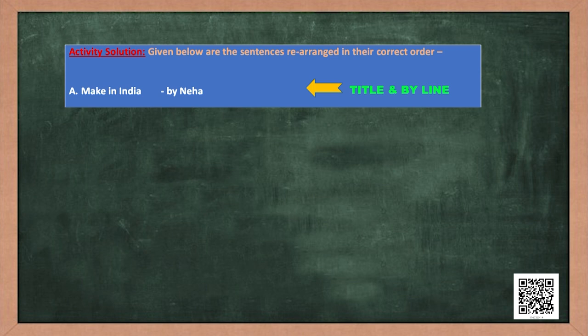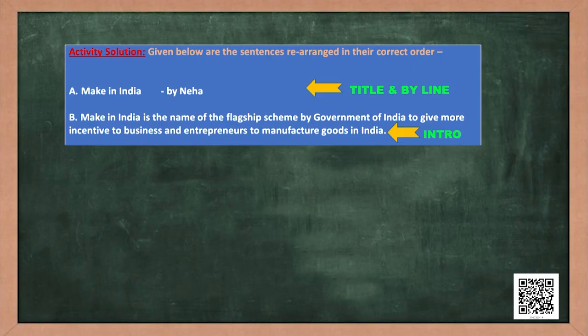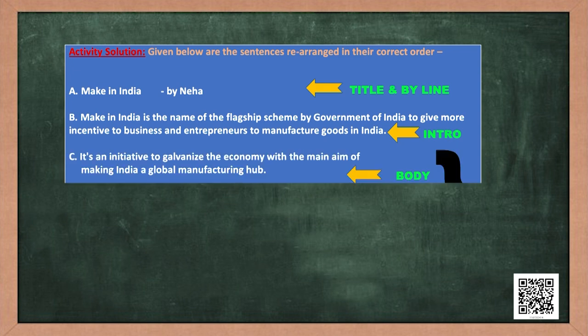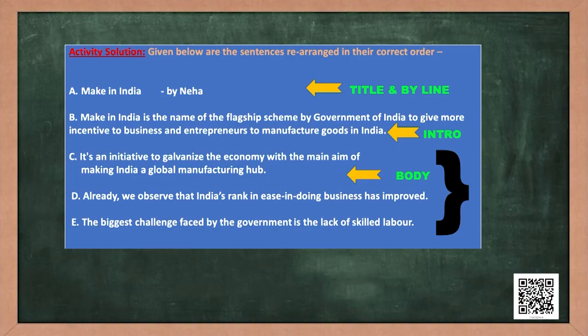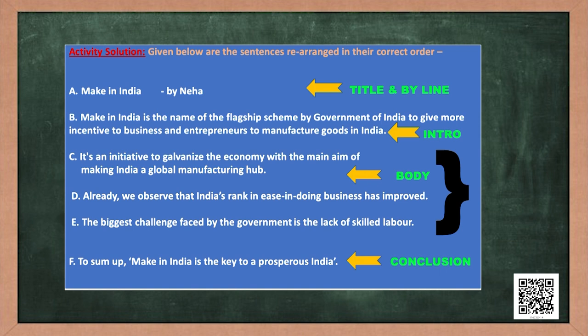Yes, 'Make in India by Neha' — that one was easy. Next we have to tell the readers what Make in India is all about, so that sentence comes next. After that, the positives — it's an initiative to galvanize the economy with the main aim of making India a global manufacturing hub — and also 'Already we observe that India's rank in ease of doing business has improved.' Then the challenges — the biggest challenge faced by the government is the lack of skilled labor. And finally the conclusion: 'To sum up, Make in India is the key to a prosperous India.' This activity has given me certain guidelines about how I should go about planning my article.